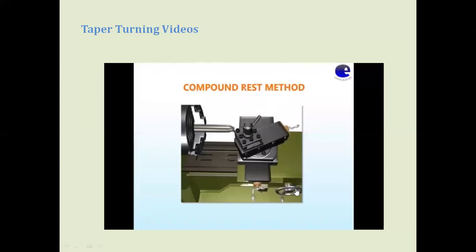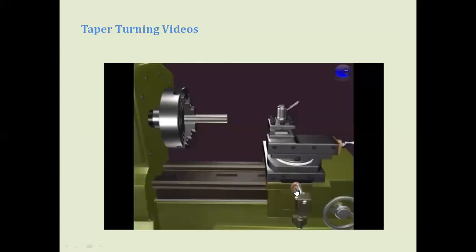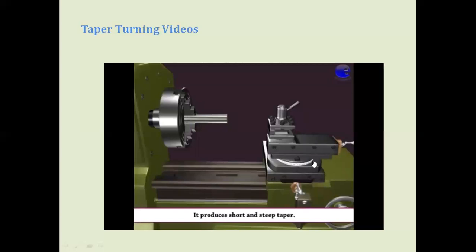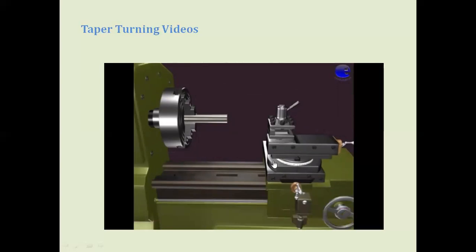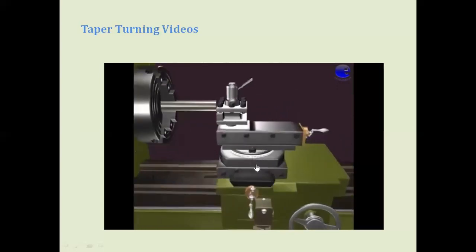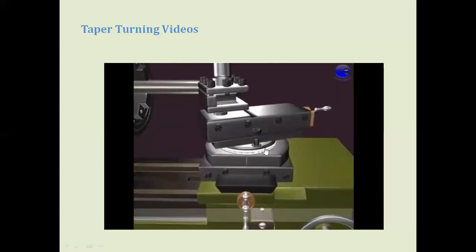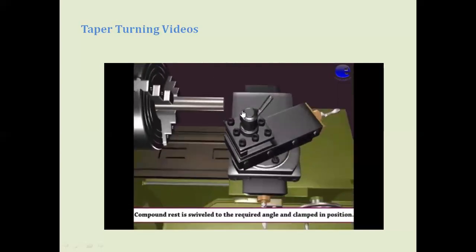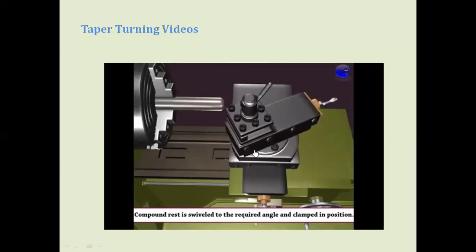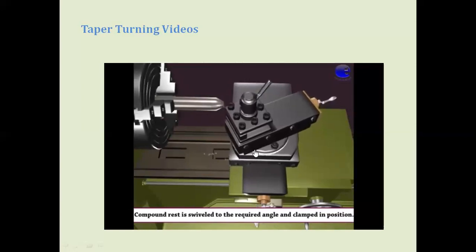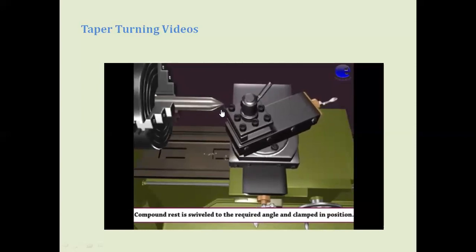The formula tan(alpha) = (D - d) / 2L is used for the offset calculation. For the swiveling compound rest method, the circular base has markings and a scale where you set the calculated value of alpha. The workpiece is held in the chuck, the compound rest on the circular base is loosened, shifted to the required angle, and the cutting tool is moved over the surface to develop the required conical surface. As the feed is given, the metal moves to develop conical surfaces.